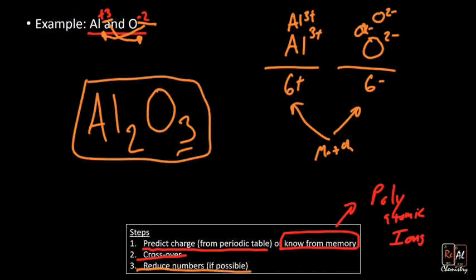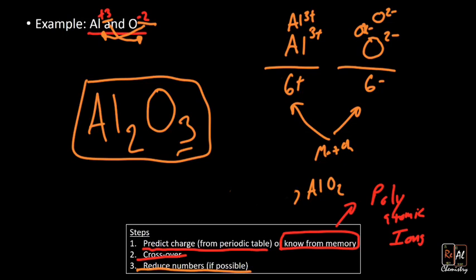There's one more step: we want to reduce those numbers if we can. For example, if we got Al2O4, we could reduce that by dividing both by the smallest number. In this case, if I divide both three and two by two, I don't get whole numbers — so we don't reduce here. But we'll look at an example shortly where we do reduce.